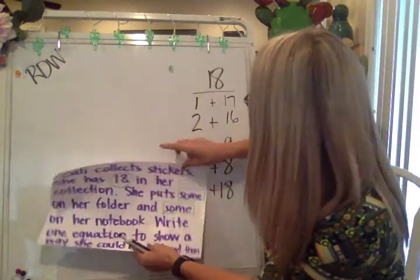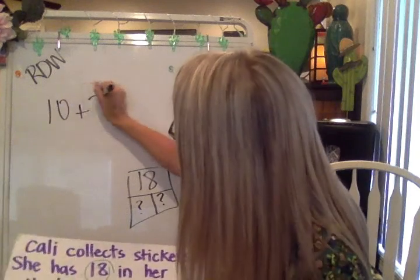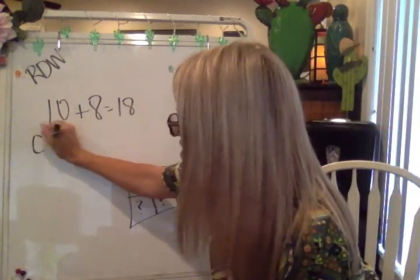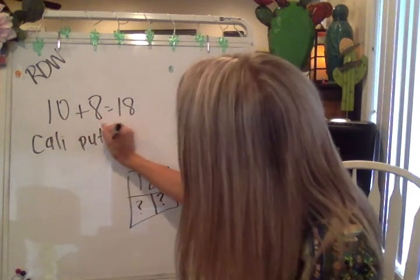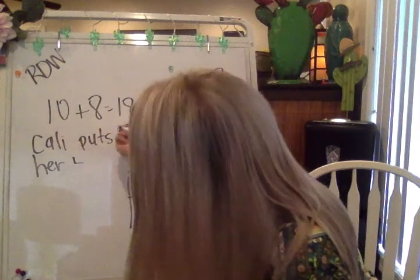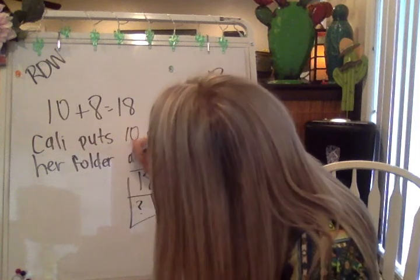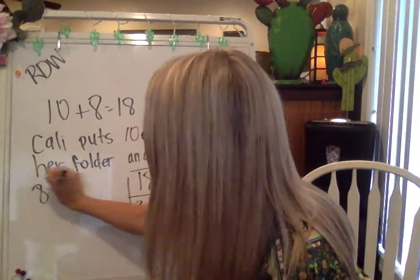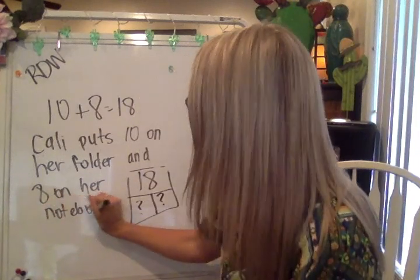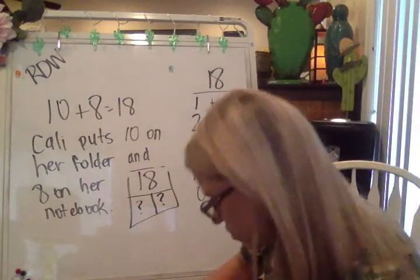Write one equation — I'm going to pick 10 plus 8 equals 18 and explain. I'm going to say Callie puts 10 on her folder and eight on her notebook. That's it — moving along.